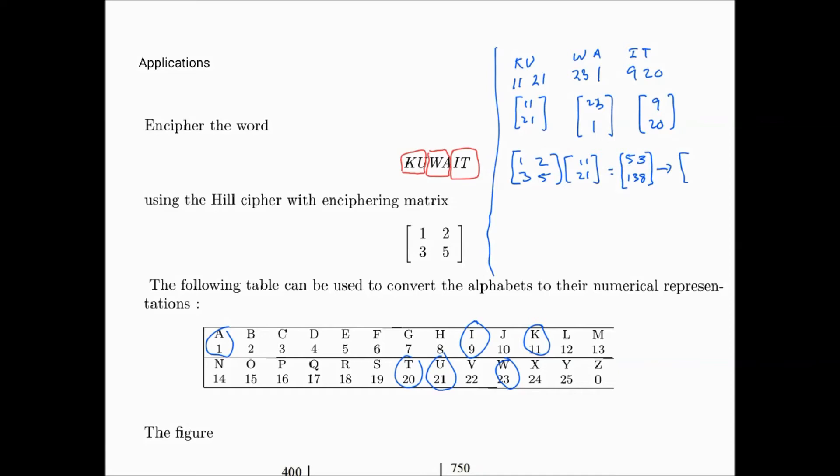53 divided by 26 leaves a remainder of 1, so that will be 1 here. And 138 divided by 26, that will be 130, so that leaves an 8. So that's the enciphered numbers of the text KU.